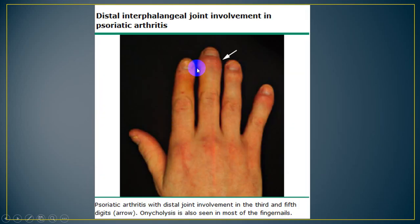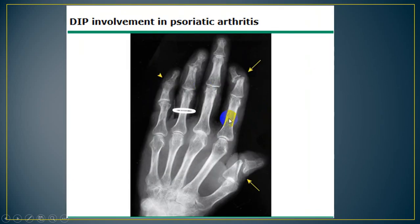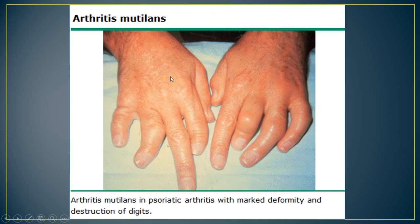This is another example of distal interphalangeal joint involvement in psoriatic arthritis. This is the X-ray of the hand showing distal interphalangeal joint involvement and destruction of the articular surface, which should exclude rheumatoid arthritis as a possibility. In another patient, although there is small joint involvement and some deformity similar to rheumatoid arthritis, the nail changes and distal interphalangeal joint involvement make it psoriatic arthritis.